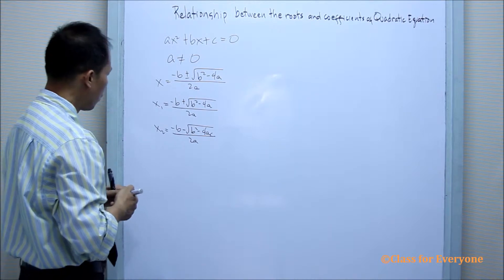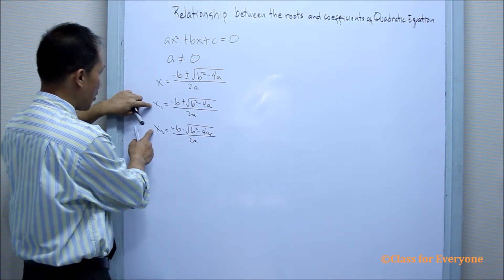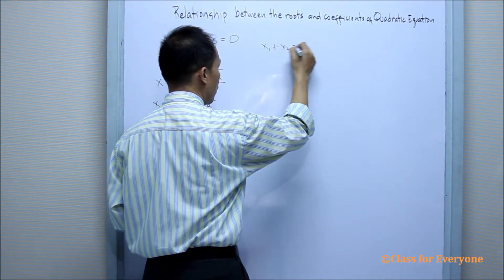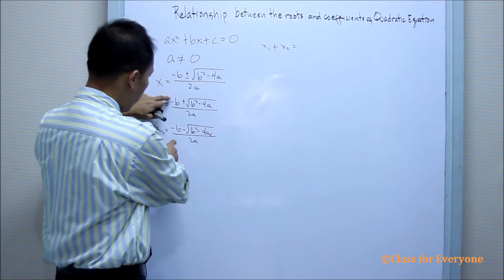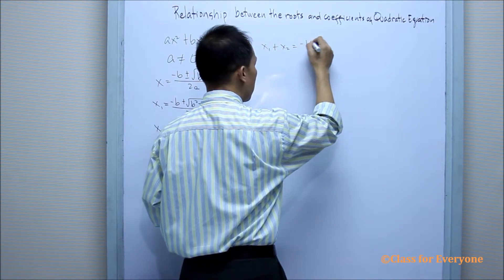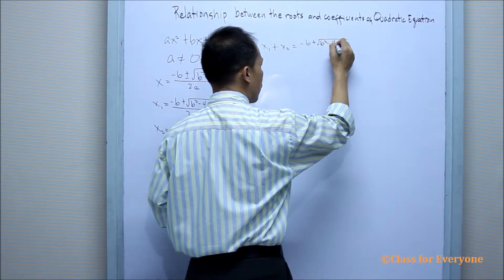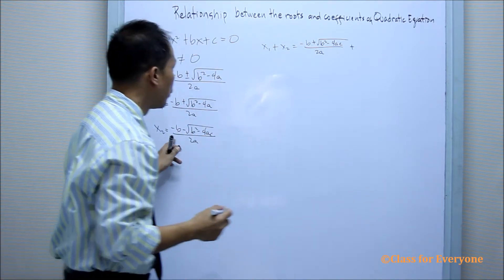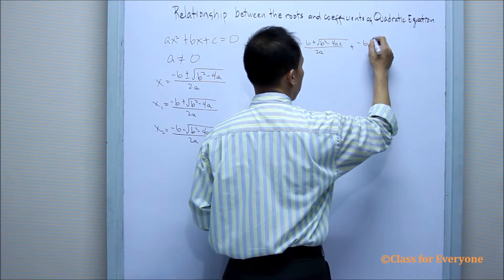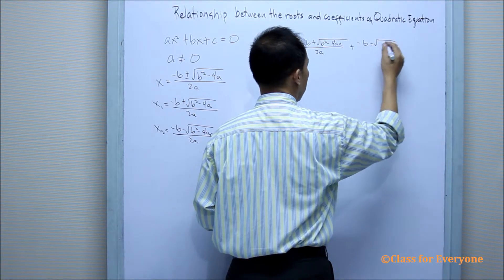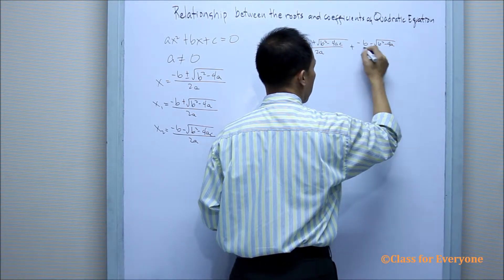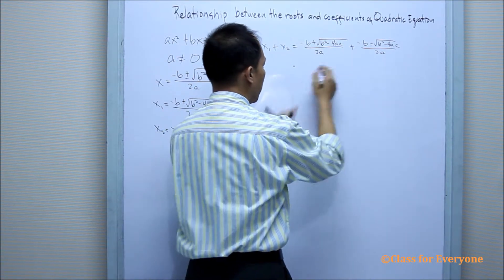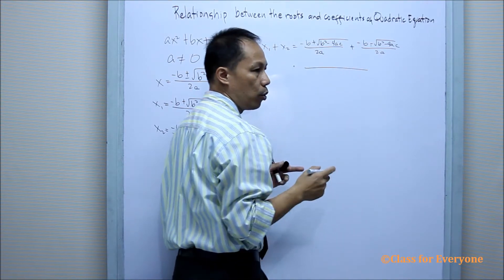Let us try to find out what will happen if we get the sum of these two roots. So, x₁ plus x₂ is equal to what? We are going to find the sum: negative b plus the square root of b squared minus 4ac, all over 2a, plus negative b minus the square root of b squared minus 4ac, all over 2a. Since they have the same denominator, we can write it as a single fraction.